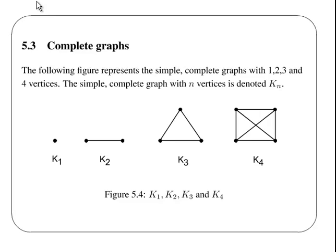In this second part of the presentation, we are going to look at special types of graphs. Here we have figures of four simple complete graphs, each with the respective number of vertices: 1, 2, 3, and 4. It is a simple graph because between each pair of vertices there is only one edge.